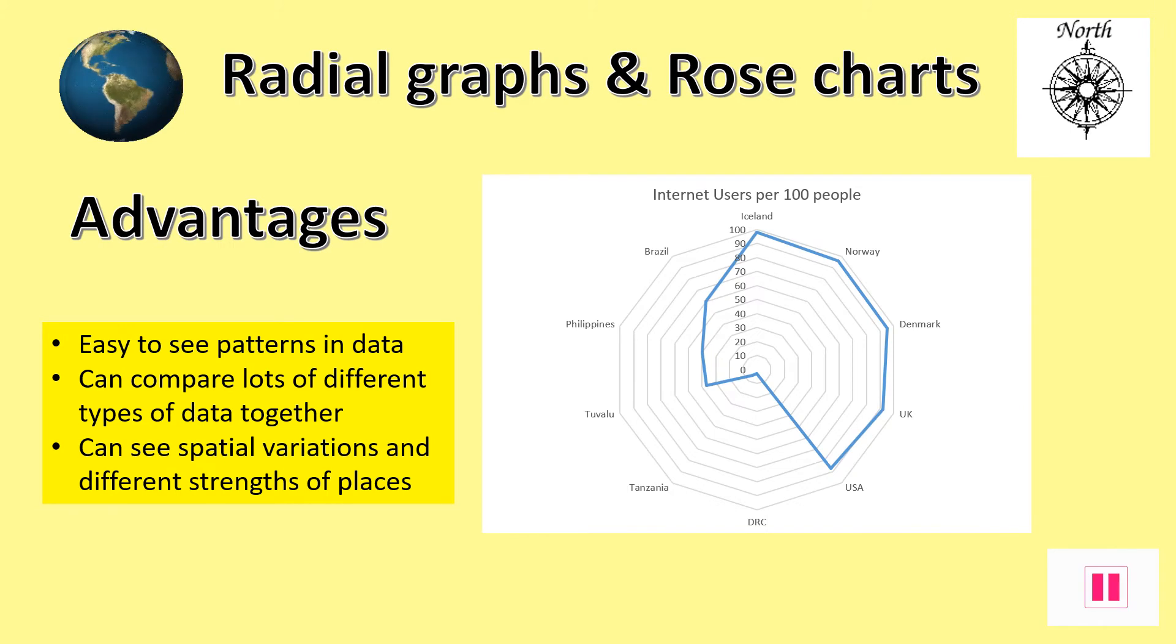The advantages of using these types of graphs are that you can easily see patterns in data, such as where Iceland has nearly 100% internet users compared to hardly any in the DRC. These graphs can also compare lots of different types of data together and arrange them spatially to further help see any patterns. Pause the show and make a note of the advantages of using these sorts of graphs and charts.